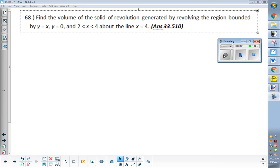Find the volume of the solid of revolution generated by revolving the region bounded by y equals x, y equals 0, and x equals 2 and x equals 4. There's a lot of lines that we're revolving and eventually we're going around the line x equals 4.